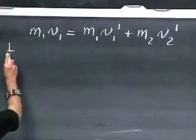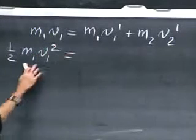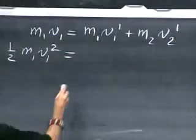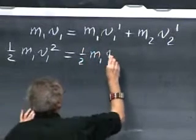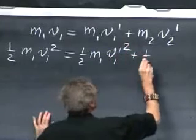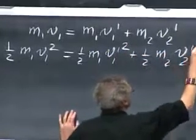And so I can write down now one-half M1 V1 squared, that was the kinetic energy before the collision, must be the kinetic energy after the collision, one-half M1 V1 prime squared plus one-half M2 V2 prime squared.